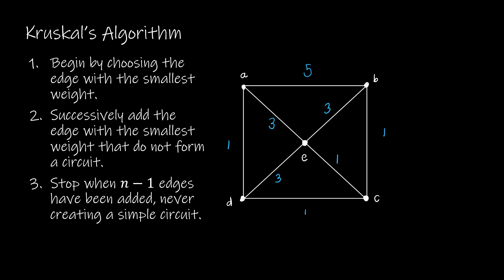When we did this with Prim's, we were tied to having one vertex that we've already visited connecting to a vertex that we have not. In this case, we are not bound by that. So, for instance, if I want to choose BC because it's a weight of one, I can do that. And then if I also want to choose AD because it's a weight of one, I can do that.